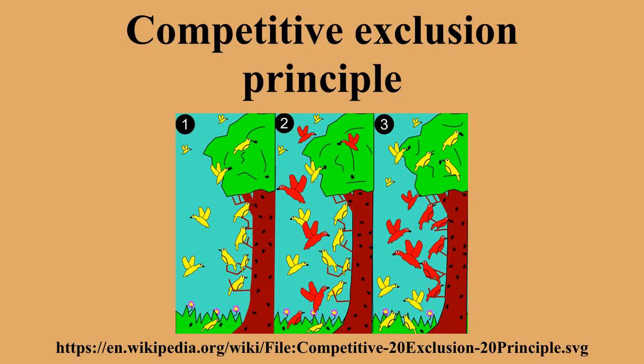Experimental basis. Based on field observations, Joseph Grinnell formulated the principle of competitive exclusion in 1904: two species of approximately the same food habits are not likely to remain long evenly balanced in numbers in the same region. One will crowd out the other. Russian ecologist Georgi Gause formulated the law of competitive exclusion based on laboratory competition experiments.